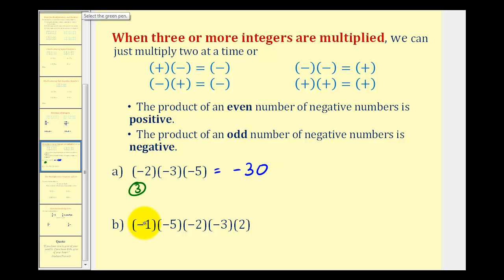Looking at the second example, we have one, two, three, four negatives involved in this product, and since four is an even number, the product will be positive.